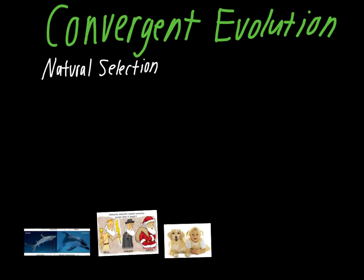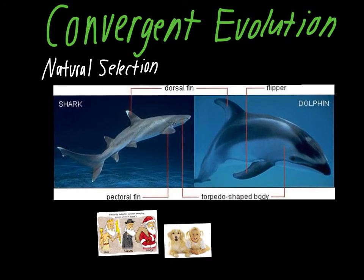The best traits for a given environment will emerge regardless of lineage — that's the core idea of natural selection. For example, comparing the morphology of a shark and a dolphin: they have the same general body shape, similar dorsal fins, and similarly formed flippers and pectoral fins. The main difference is their tails — sharks swim with a side-to-side motion while dolphins swim with an up-and-down motion. But both have a hydrodynamic body plan where water moves easily around them with minimal drag.